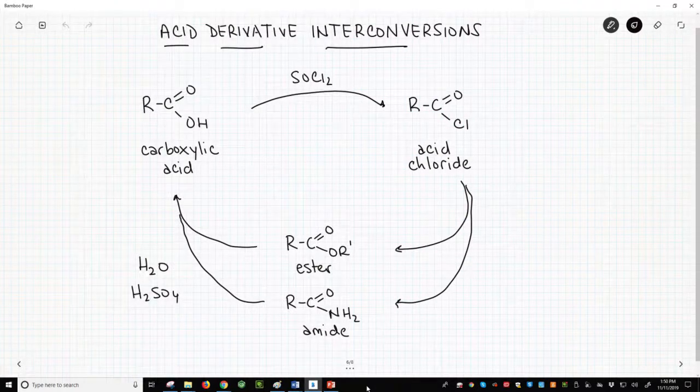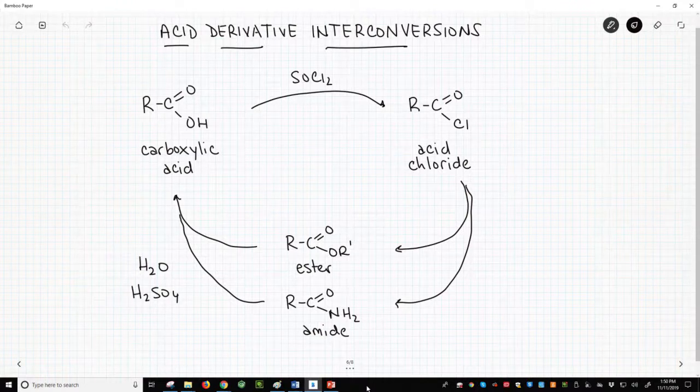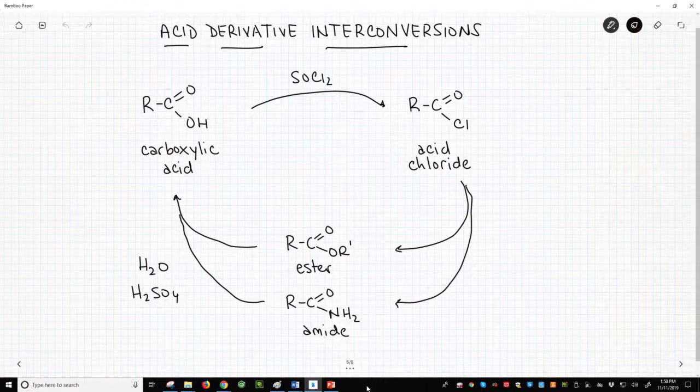On screen is what I think of as the cycle for interconverting acid derivatives. Let's see how this works, and then I'll maybe mention some qualifiers. This cycle begins with the parent of the acid derivatives, the carboxylic acid.